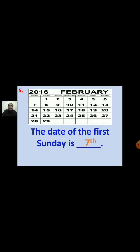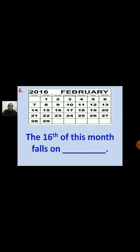Sixth question: The 16th of this month falls on dash. To find the answer, first locate the date 16 on the calendar, then see which column it is in to find the day. You should be careful — check whether the question asks for a day or a date and answer accordingly. The 16th of this month falls on Tuesday.